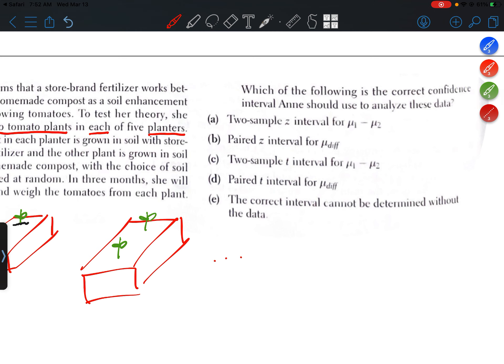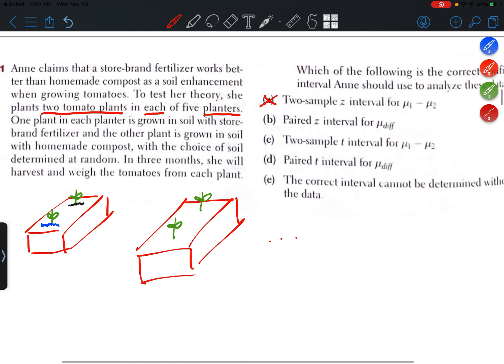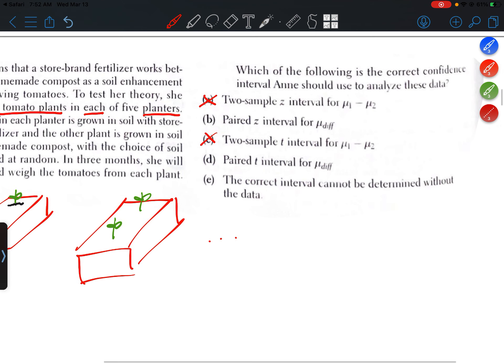Alright, so going through the options, I would eliminate A because it says two-sample. I would eliminate C, and E says the correct interval cannot be determined without the data. We could eliminate that choice as well.